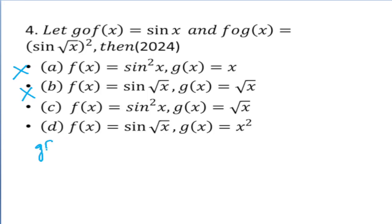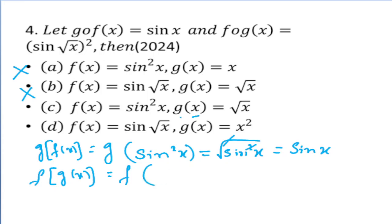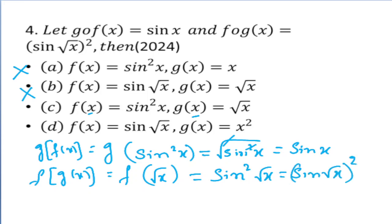Options C and D both have the square as well as √x, so we verify option C. In option C, f(x) equals sin²x and g(x) equals √x. For g∘f: g(f(x)) equals g(sin²x) equals √(sin²x) equals sin x — matching the given function. For f∘g: f(g(x)) equals f(√x) equals sin²(√x), which can also be written as (sin√x)² — also matching. So option C is the correct answer, and we do not need to verify option D.